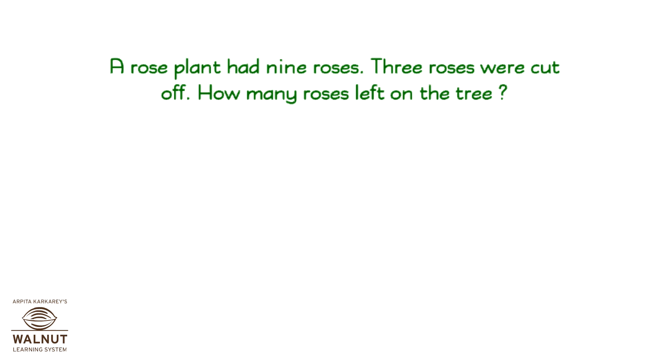A rose plant had 9 roses. 3 roses were cut off. How many roses left on the tree? So 9 minus 3 is equal to 6. So there were 6 roses left on the tree.